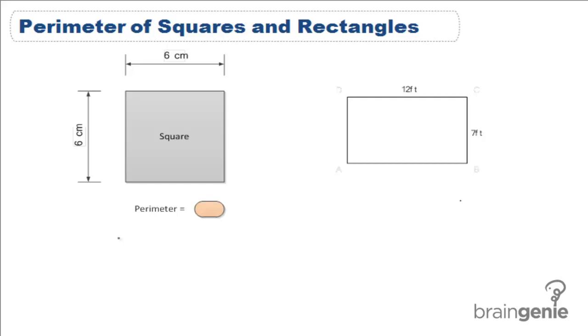For a square, since every single side is going to be the same length and there are always 4 sides, we just do 4 times length to get our perimeter. For the square above, since each length equals 6 centimeters, we just do 4 times 6 equals 24 centimeters.